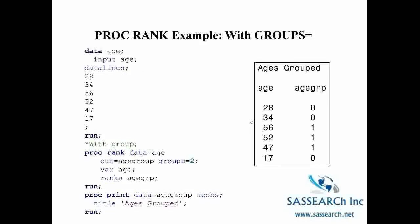In this second example, I've included the GROUPS equals option. And I've set GROUPS equal to 2. So using PROC RANK, we've created a new variable age group, which divides the subjects into 2 groups. And if we were to do a PROC FREQ of age group, we would see that we have an equal number of observations with the value of 0 for age group and an equal number with the value of 1 for age group.